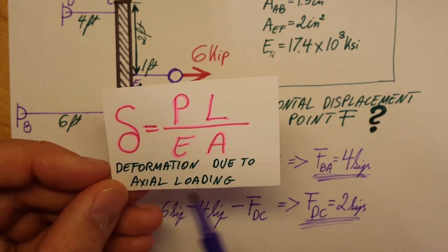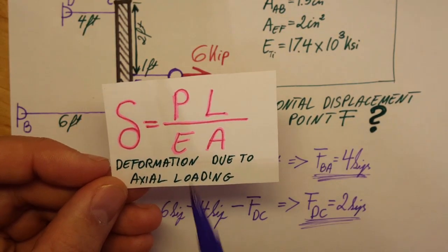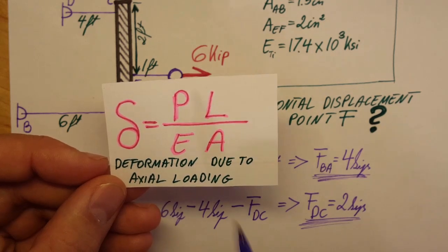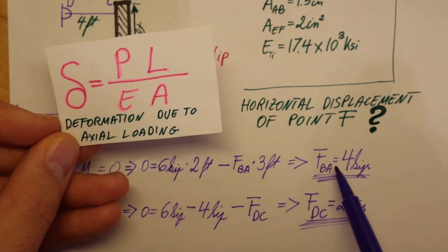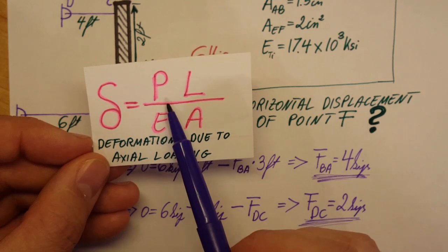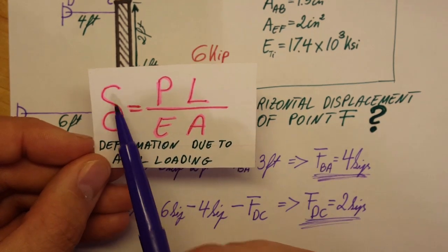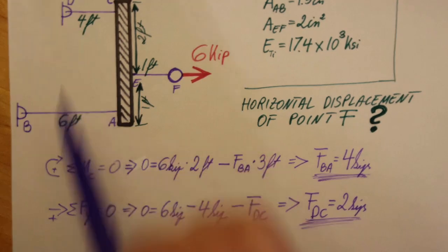Here's our axial loading deformation formula, and this is the one we're going to be using. This is why we needed to find the forces. We're going to plug them in here and therefore we're going to find the deformation of each individual rod.